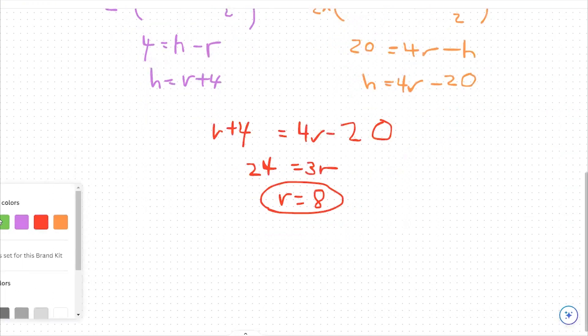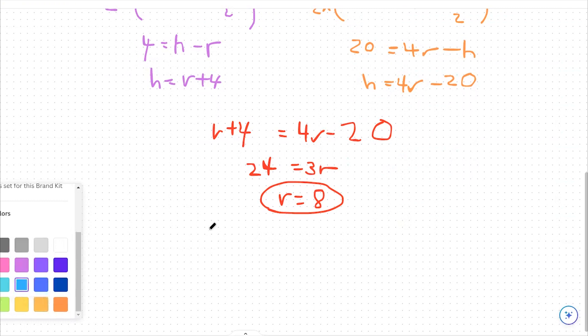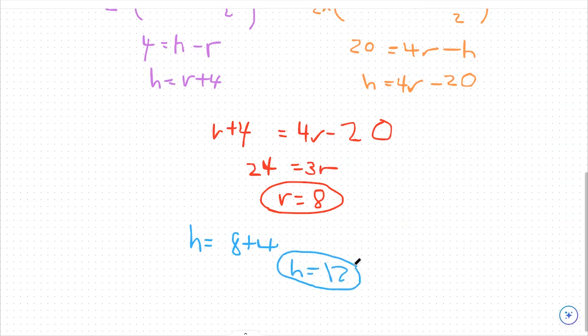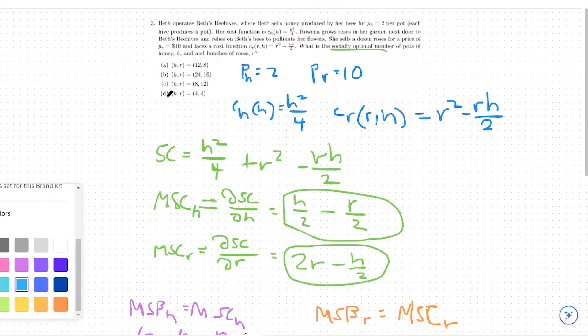I can take this number and plug it back into either of these equations. This one looks a little bit more inviting to me. So I'm going to go for that. And so we can say honey is equal to 8 plus 4. So we should produce 12 units of honey. So our optimal pairing is 12 units of honey, 8 units of roses. And so if we scroll up here, 12 units of honey and 8 units of roses is going to be option A.